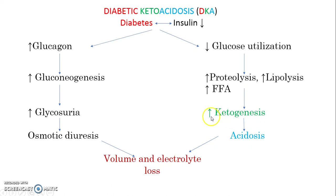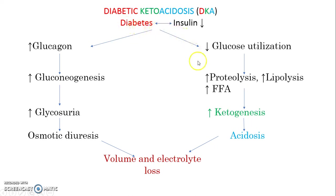This also leads to increased acid, since ketone bodies are acidic. So there is more acid accumulation in the body, which also causes volume and electrolyte depletion. So we have diabetes because of lesser insulin, increased ketone body formation, which causes acidosis, and ultimately volume and electrolyte loss — this is diabetic ketoacidosis.